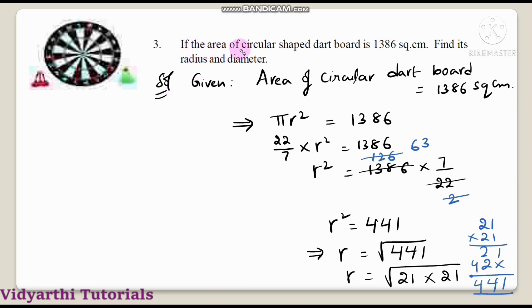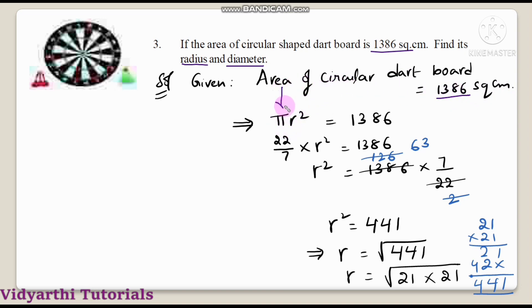Question number 3: if the area of a circular shaped dart board is 1386 square centimeters, find its radius and diameter. Area of the circular dart board is 1386 square centimeters. Using the area of circle formula pi r square, we set pi r square equal to 1386.